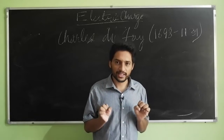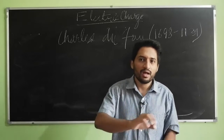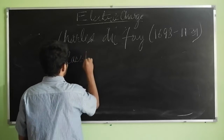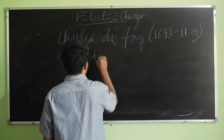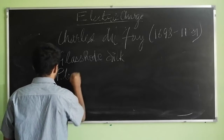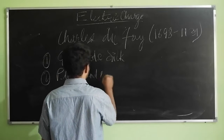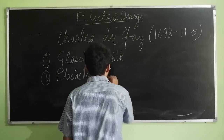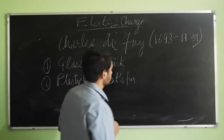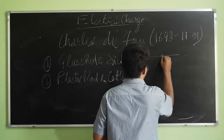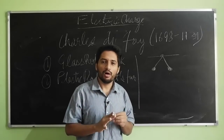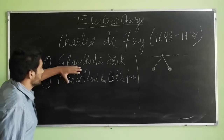Many scientists at the time were doing experiments — rubbing things and observing which objects become charged. The two important combinations to remember are: first, glass rod and silk; second, plastic rod and cat's fur. Experimenters took two pith balls — similar to thermocol or polystyrene balls — suspended normally, and touched them with charged rods.